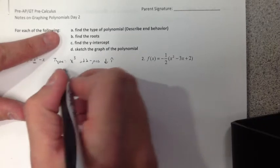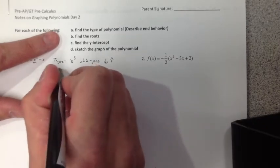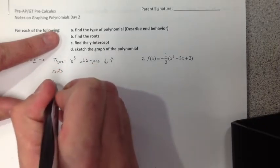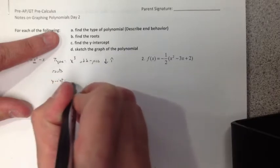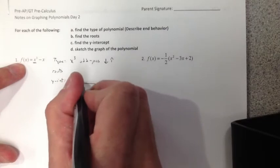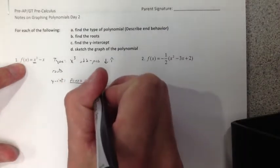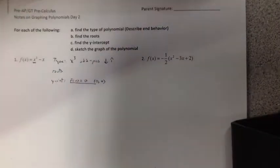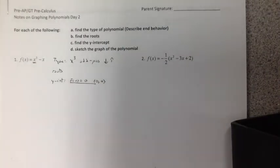Now the roots we're going to get in a second. We'll get those last. Because the y-intercept is also very easy to get. If I let x be 0, I just get 0. So our y-intercept is (0, 0).